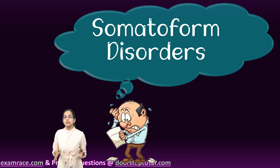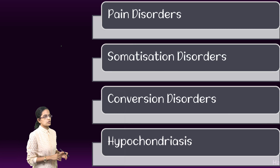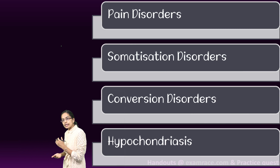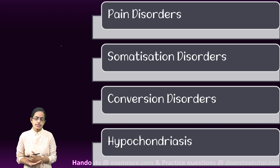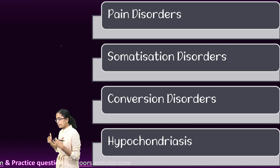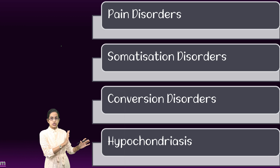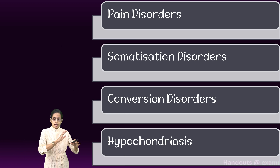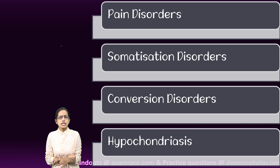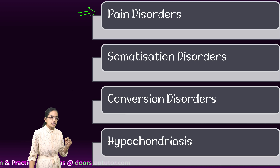When there are physical symptoms without any physical disorder, we call them somatoform disorders, broadly classified into four categories. The first is pain disorder: the person complains of extreme pain, but there is no physical cause, no biological finding — investigations come out normal, yet the person keeps complaining of extreme pain in some organ of the body.